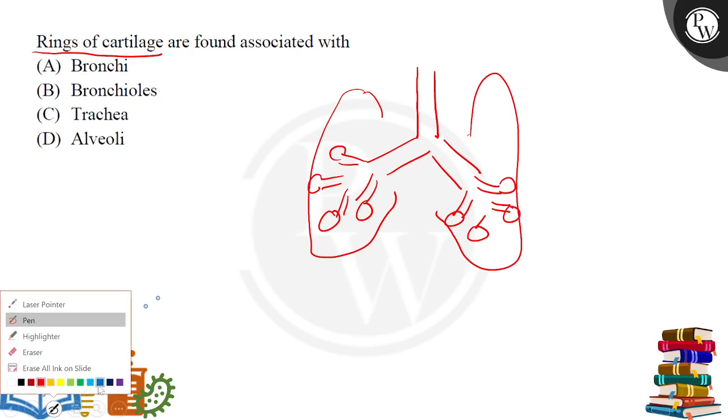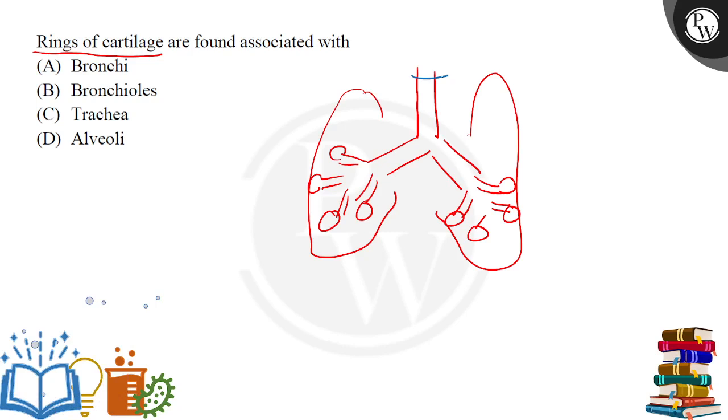So if we talk about trachea, which is our windpipe, our C-shaped incomplete cartilage rings are present on the trachea. So option C is the correct answer. The answer is option C, trachea.